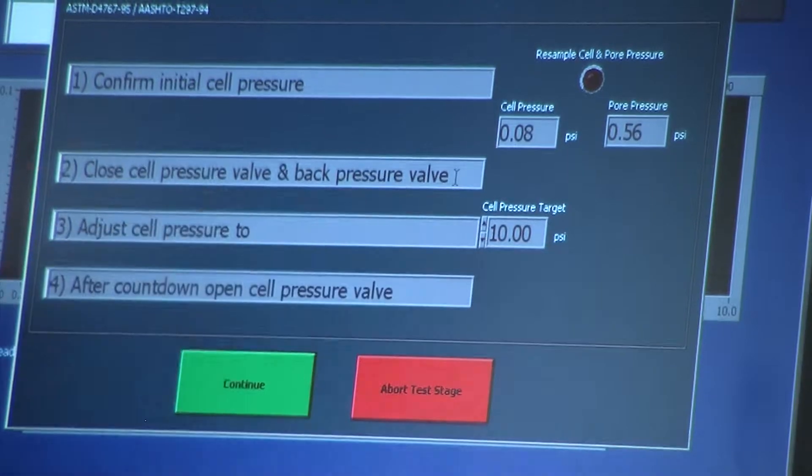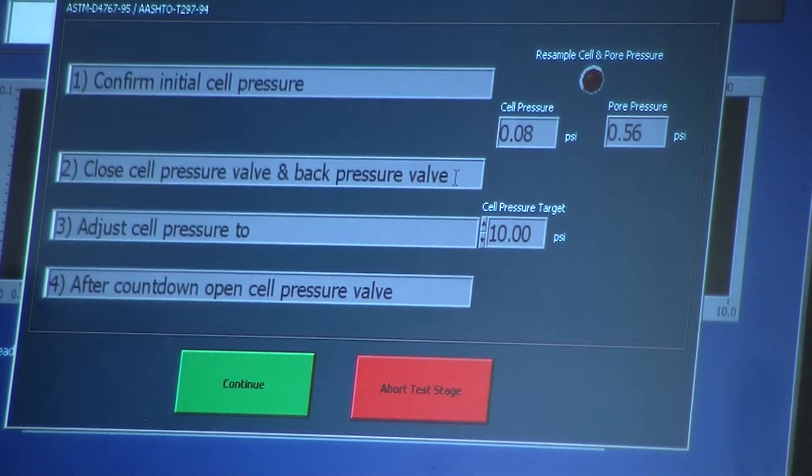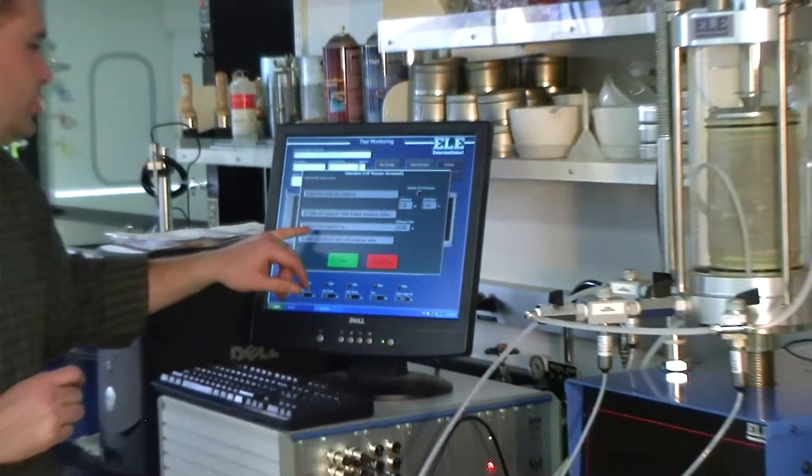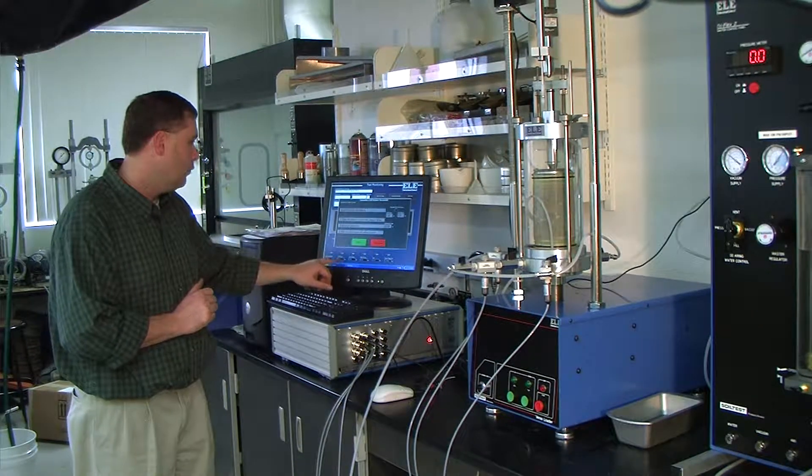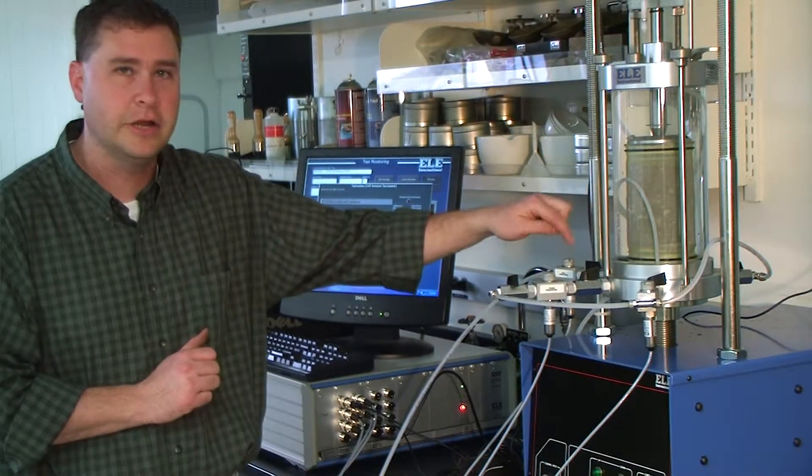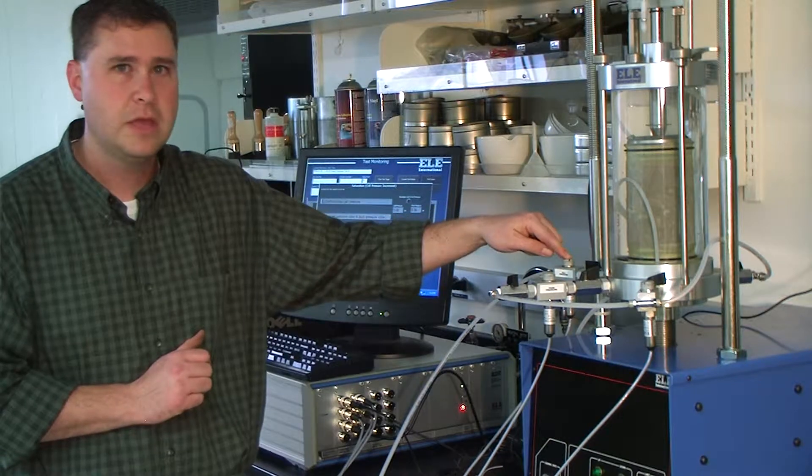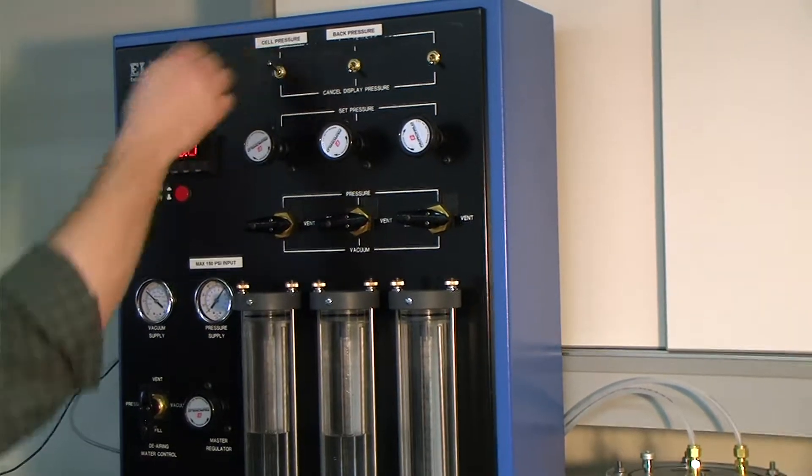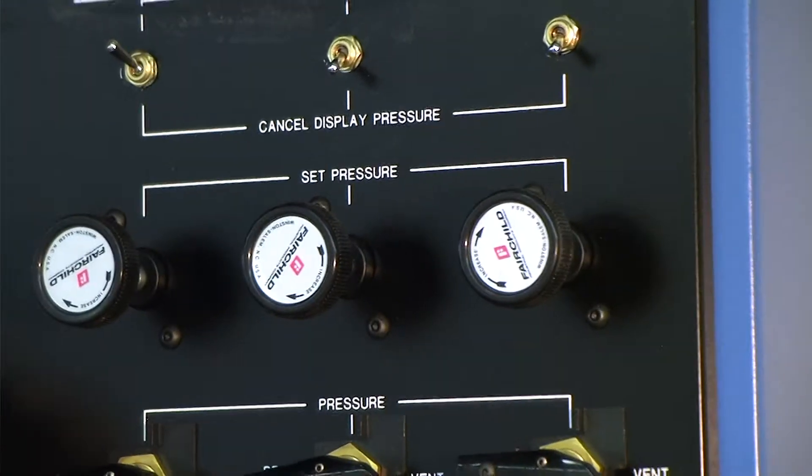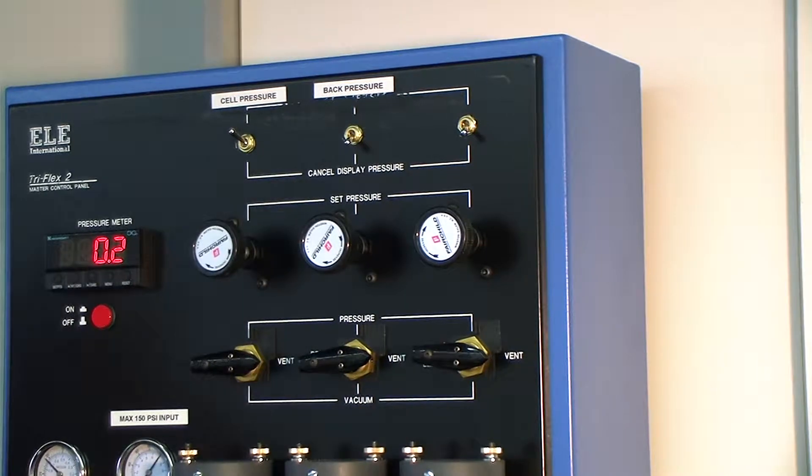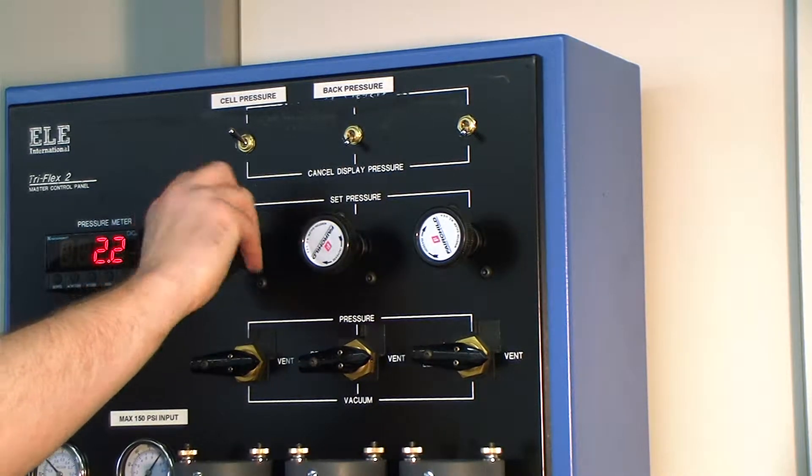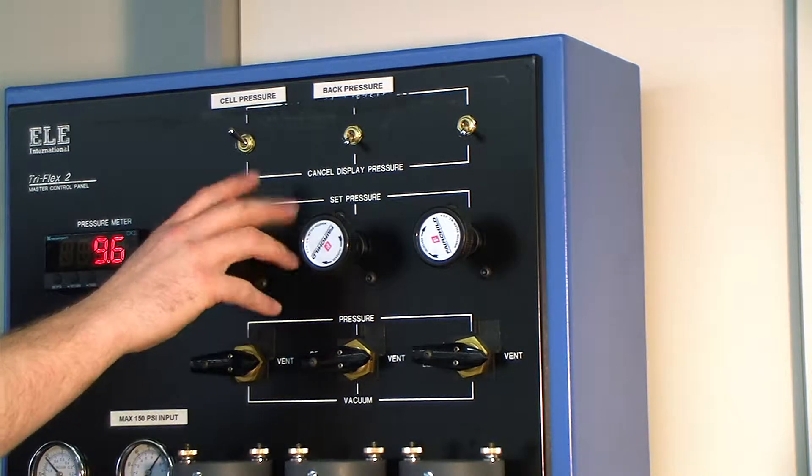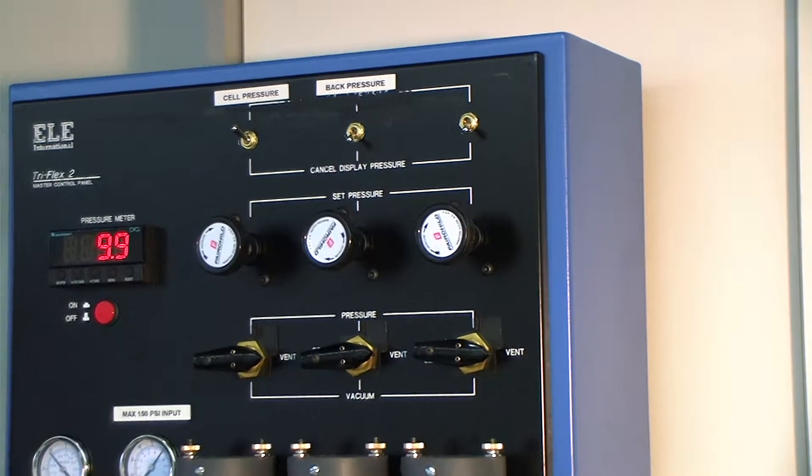Step three, adjust the cell pressure to 10 PSI. Why 10 PSI? We told it that number when we wanted each increment to be 10 PSI of cell pressure. We monitor this transducer right here, keep the valve closed, go over to the Triflex 2 panel, Cell Pressure. Click your toggle switch to up to read on the pressure meter. This gives us a ballpark figure. What's on the screen gives us an accurate figure. Turn your regulator until you get about 10 PSI. We'll get it close to 10. Walk over to the screen.